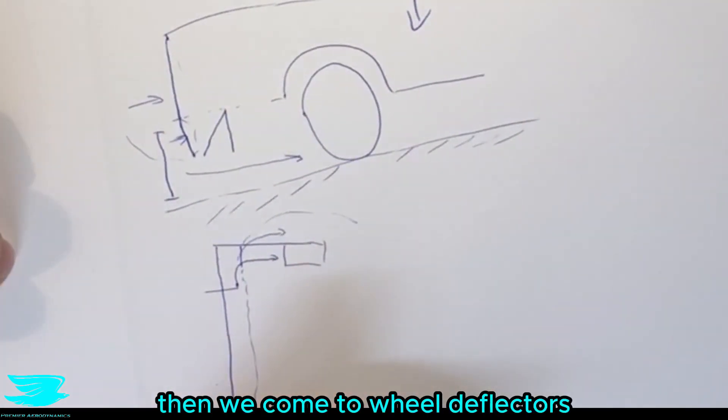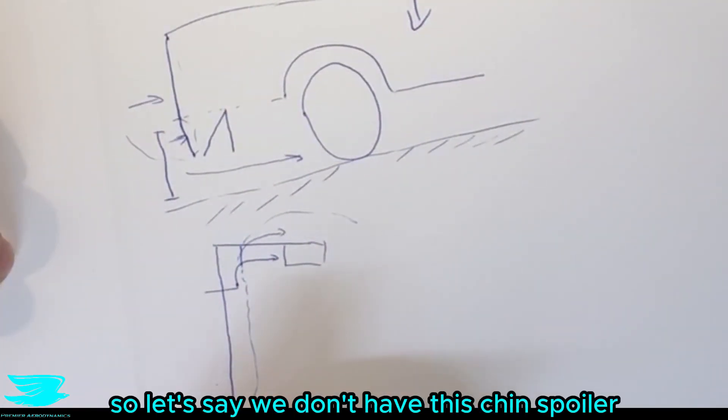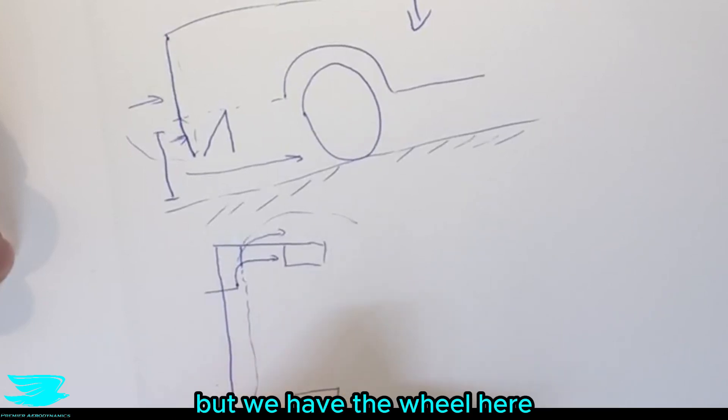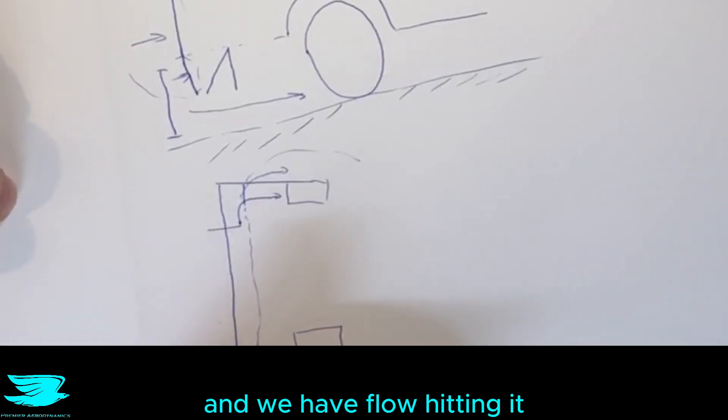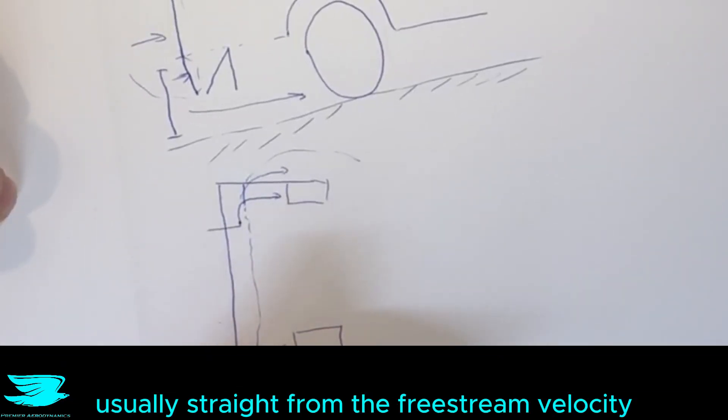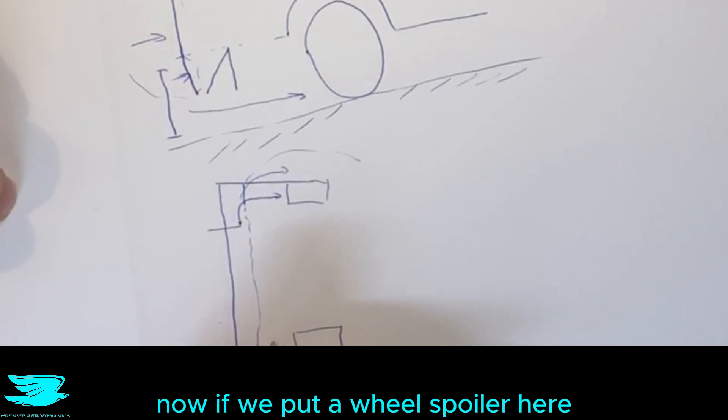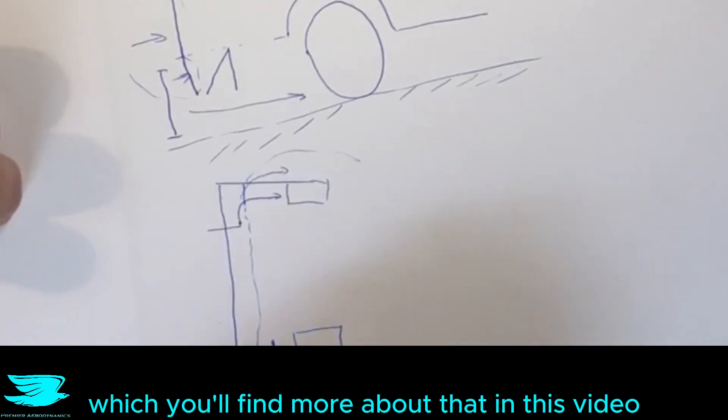Then we come to wheel deflectors, front wheel deflectors. So let's say we don't have this chin spoiler but we have the wheel here and we have flow coming in usually straight from the free stream velocity. Now if we put a wheel spoiler here which you'll find more about in this video we can then redirect the flow around.